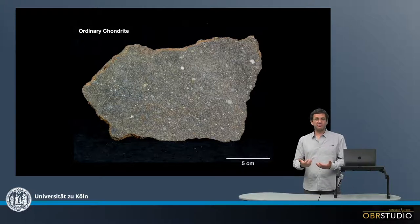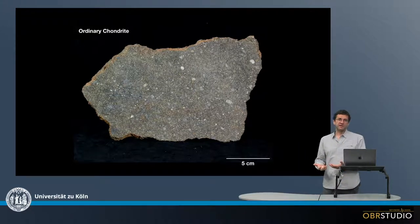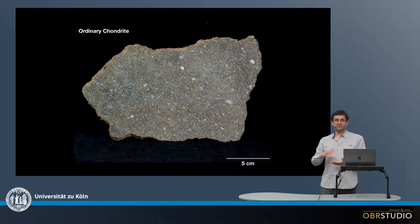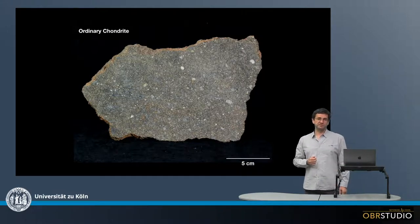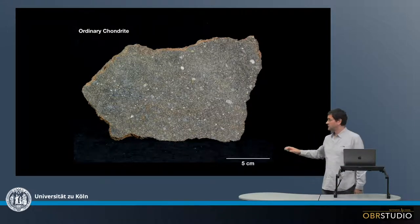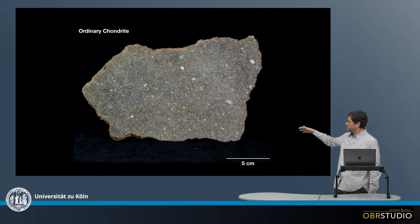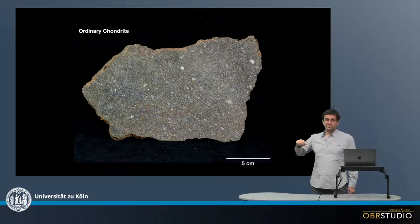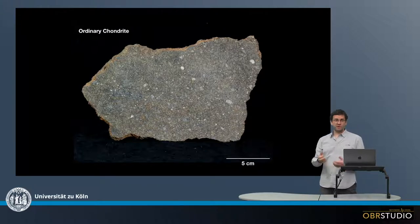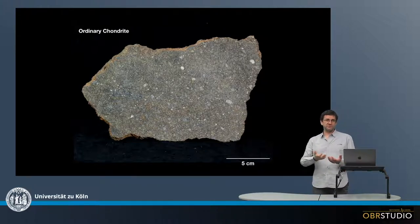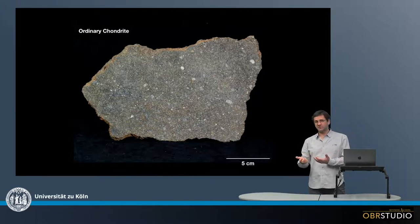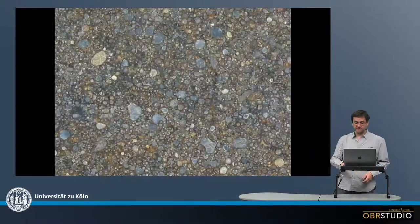Chondrites come from undifferentiated parent bodies. This means these still contain components that formed free floating in the early solar system. So when we look at this ordinary chondrite here, we can see it has quite a speckled appearance. Now most of these speckles are chondrules. In fact, an ordinary chondrite consists of up to 80 volume percent of these chondrules.